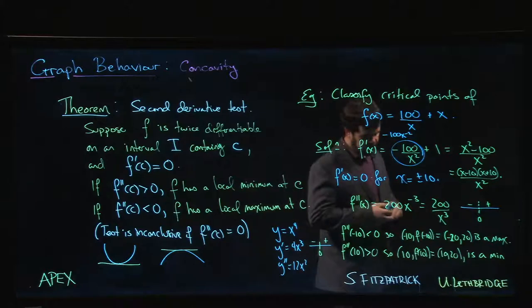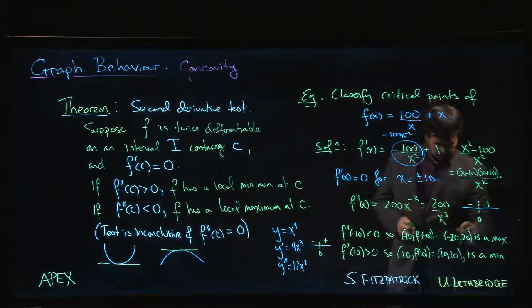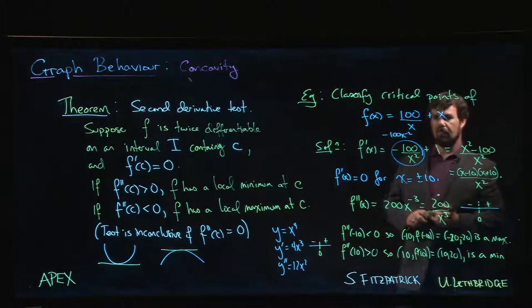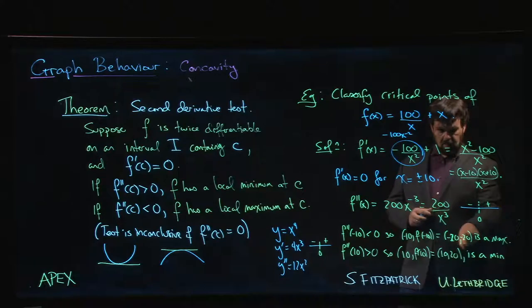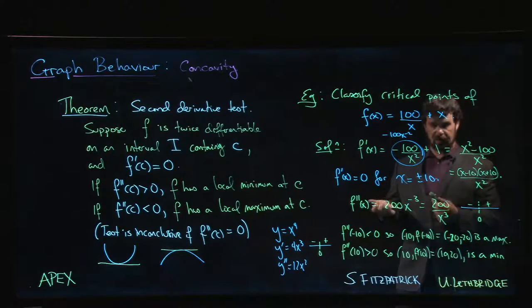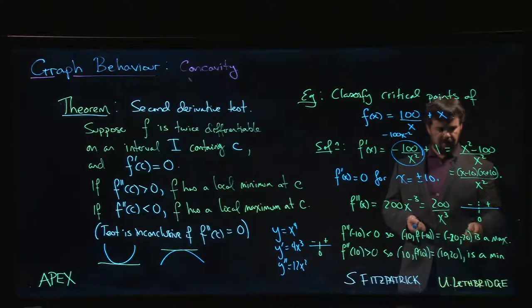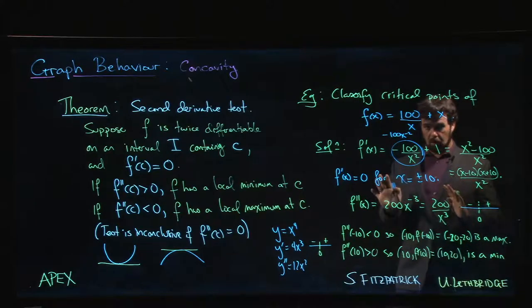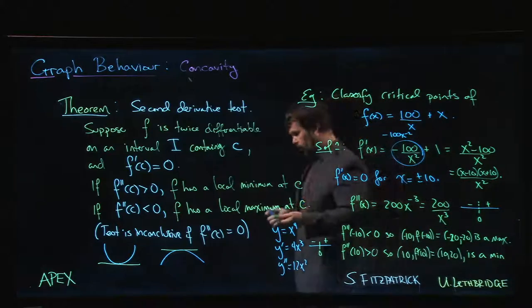You have a maximum with a y-value of -20 and a minimum with a y-value of +20. That seems wrong, right? How could the maximum be smaller than the minimum? But remember, these are local extreme values—local max and local min.